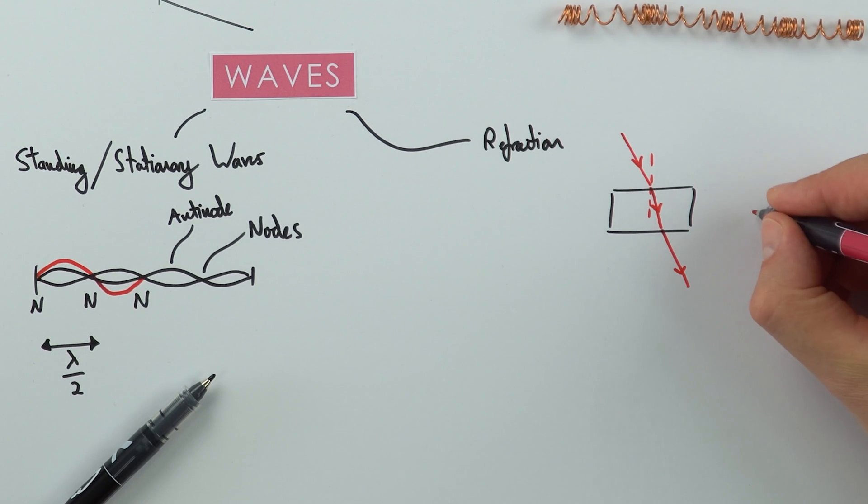We take it a stage further at A-level and we actually do some calculations. We can actually calculate the refractive index, which we use the letter n for. This tells us how much that wave or the light in this case would slow down. So there's a few more calculations. It might only be if you did the Edexcel IGCSE that you actually had to do calculations at GCSE level, but I've got videos that explain that at GCSE and also going into A-level.